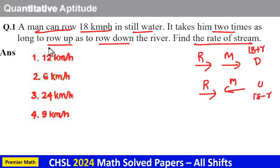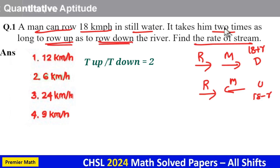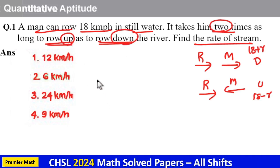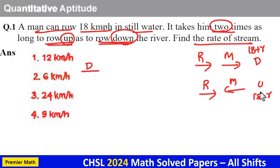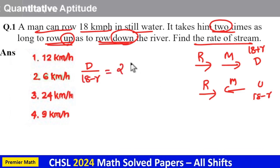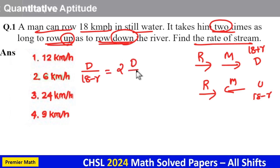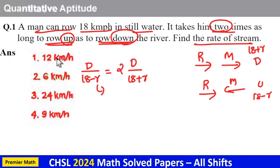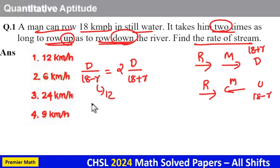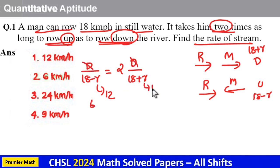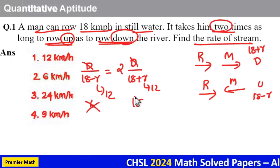You can solve this question in two methods. Here, upstream time is equal to distance divided by upstream speed, which is 18 minus r, and this equals two times the downstream time. Downstream time is equal to distance d divided by downstream speed, which is 18 plus r. Putting r as 12: 18 minus 12 equals 6, giving 1 by 6. And 18 plus 12 equals 30, so 2 by 30 equals 1 by 15. Since 1 by 6 is not equal to 1 by 15, option r=12 does not work.